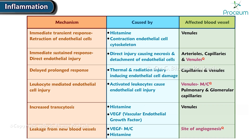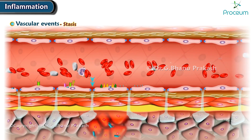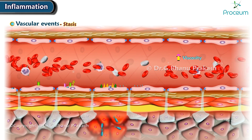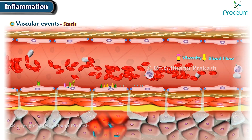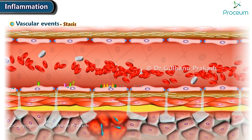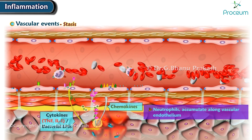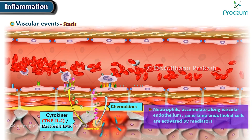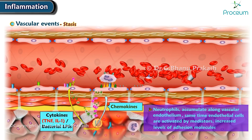The last vascular change we'll talk about is called stasis. The loss of fluid is responsible for the concentration of red cells in small vessels. Due to this increased viscosity, there will be slower blood flow — this phenomenon is known as stasis. Therefore, inflammation is associated with increased chances of clot formation. As stasis develops, blood leukocytes, principally neutrophils, accumulate along the vascular endothelium. At the same time, endothelial cells are activated by mediators produced at sites of infection and tissue damage, and express increased levels of adhesion molecules.